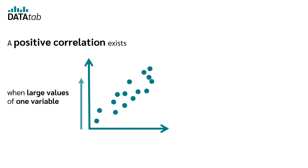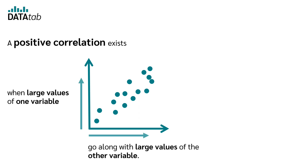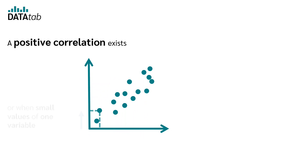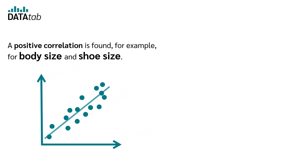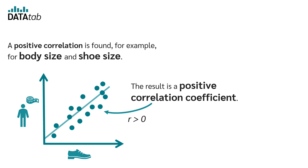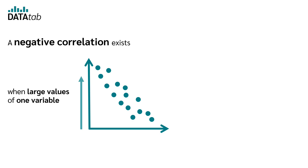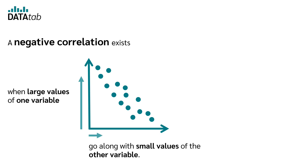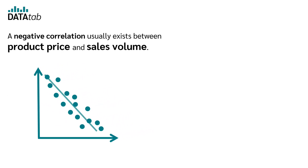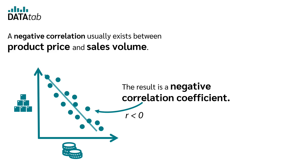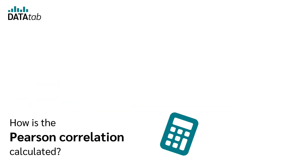A positive correlation exists when large values of one variable go along with large values of the other variable, or when small values of one variable go along with small values of the other variable. A negative correlation usually exists between product price and sales volume, resulting in a negative correlation coefficient.